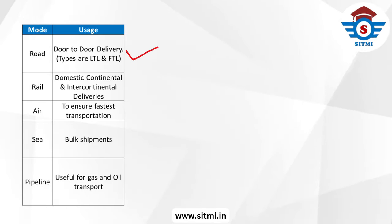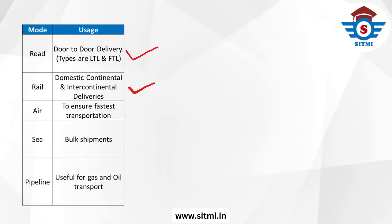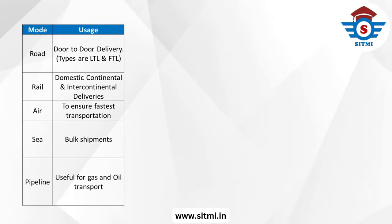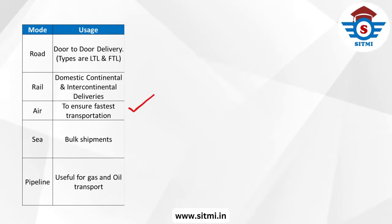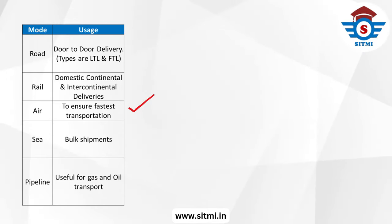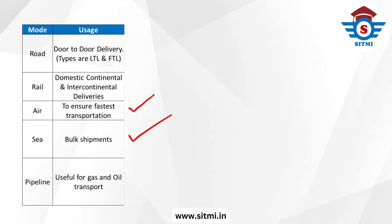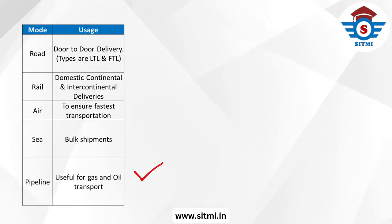Road transportation is mainly used for door-to-door delivery. Rail transportation is mostly used for domestic, continental, and intercontinental deliveries. In case of air transportation, the main usage is to ensure the fastest transportation of a product from one location to another. In case of sea transportation, the major usage is to transport bulk shipments from one location to another. Pipeline transportation is used to transport gas and liquid material from one place to another.